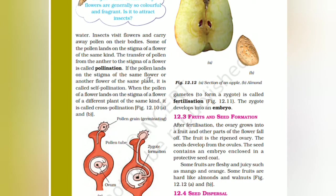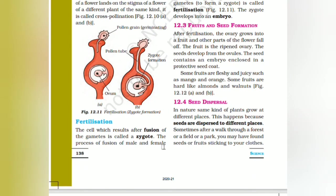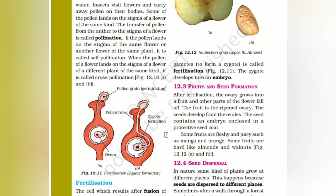If the pollen lands on the stigma of the same flower or another flower of the same plant, it is known as self-pollination. When the pollen of a flower lands on the stigma of a flower of a different plant of the same kind, it is known as cross-pollination. The cell which results after fusion of gametes is known as a zygote. The process of fusion of male and female gametes is known as fertilization, and the zygote develops into an embryo.